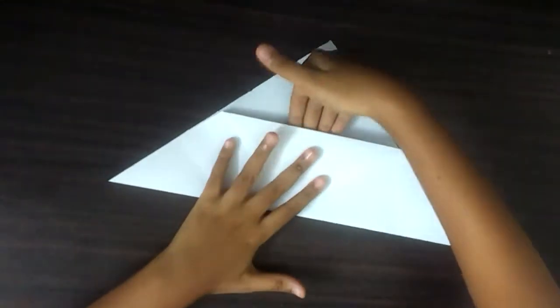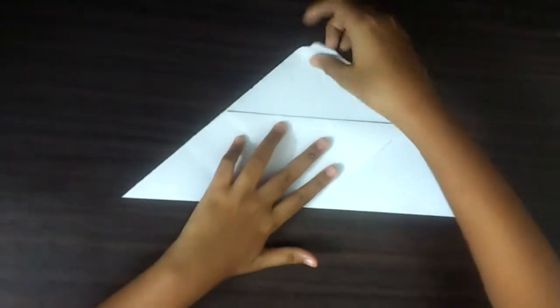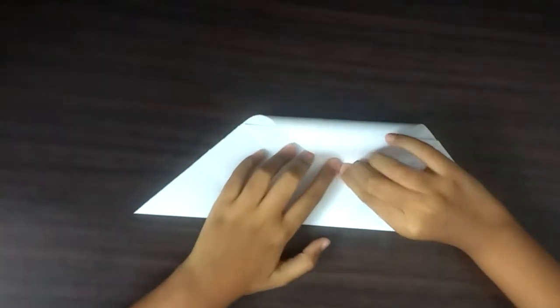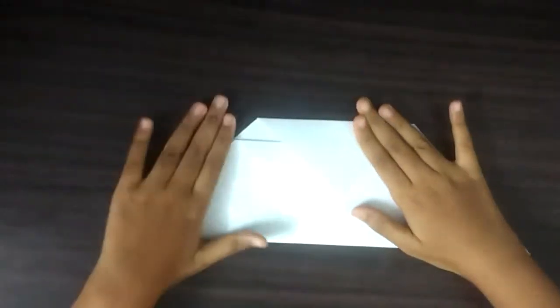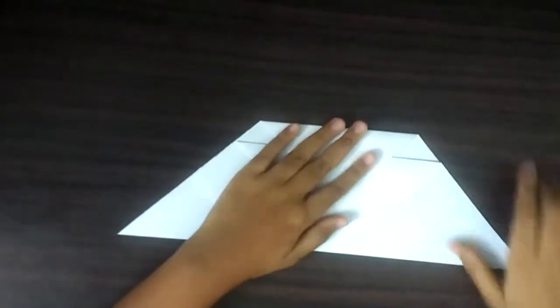Now we get a line over here. We are going to take the other flap and fold it a little above this line. Now we get the corner over here.